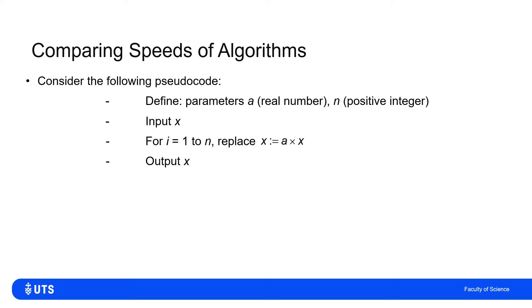So it'll be X, then A times X, then A times A times X, then A times that and so on — and it'll do that N times over.